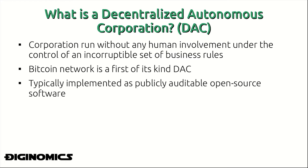A decentralized autonomous corporation can be thought of as a corporation which functions outside the involvement of human control. It is essentially owned by no one, operating autonomously, and is controlled by an incorruptible set of business rules. When we say incorruptible, that set of business rules is derived from the architecture of the protocols or the corporation's source code itself.